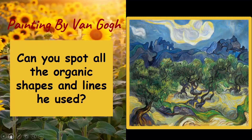Here's another painting by Van Gogh. Can you spot all the organic shapes and lines he used? Look at the clouds and how they flow in different directions — that is an organic shape. Even the way he made the trees and the mountains, all created by nature using organic lines and shapes.